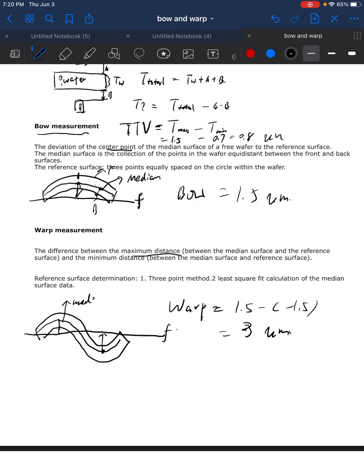Notice that this concept is different from the bow. The reason I think most of the time the warp is a better parameter describing the distortion of the wafer is because it looks at the entire wafer. It will provide a more useful measurement of the true wafer shape.